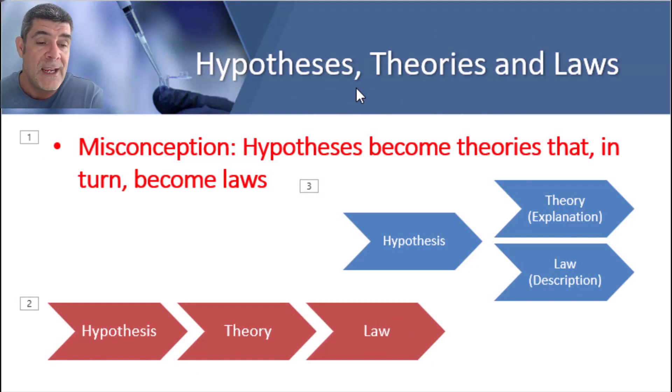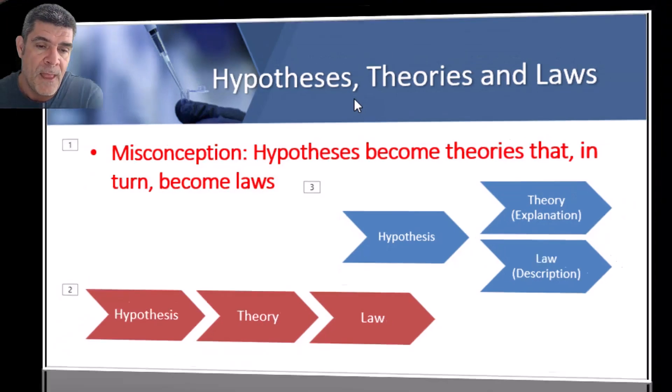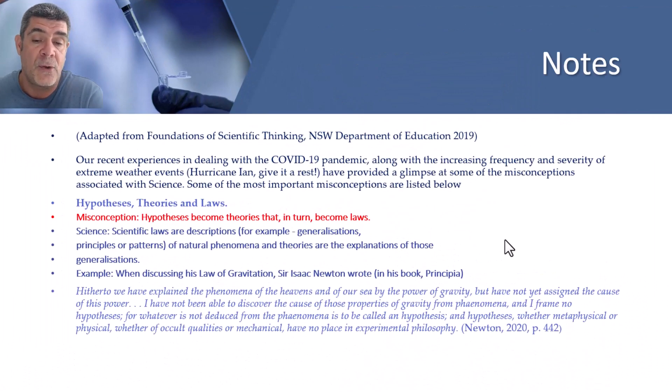When discussing the law of gravitation in his Principia, Sir Isaac Newton wrote, Hitherto we have explained the phenomena of the heavens and of our sea by the power of gravity, but we have not yet assigned the cause of this power. I have not been able to discover the cause of those properties of gravity from phenomena and I frame no hypothesis. For whatever is not deduced from the phenomena is to be called a hypothesis and hypotheses, whether metaphysical or physical, whether of occult qualities or mechanical, have no place in experimental philosophy. Thank you, Sir Isaac.